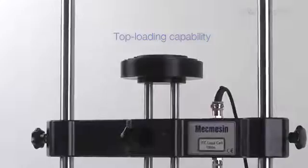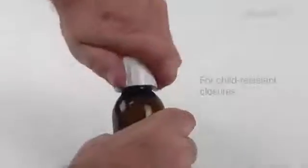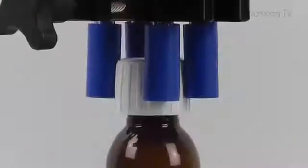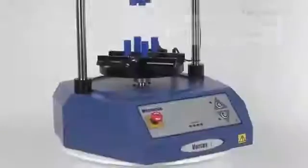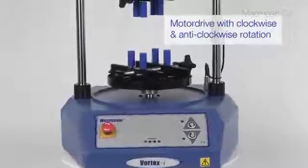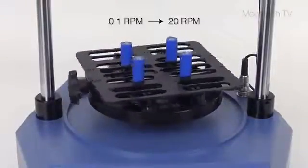A top loading facility is available to provide a constant downforce, for example when measuring child resistant closures. The precision motor drive ensures repeatable testing by setting controlled speeds from 0.1 all the way up to 20 RPM.